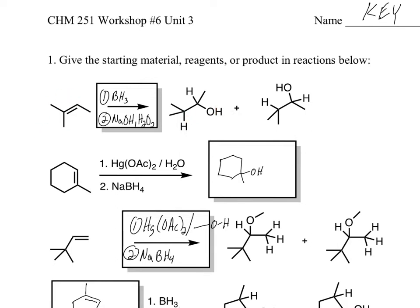If you see here, from this starting material to this product, you notice that the OH ends up on the less substituted carbon. That should tip you off to think, okay, that must be BH3 step 1, NaOH H2O2 step 2. You do need to have step 1 and step 2.